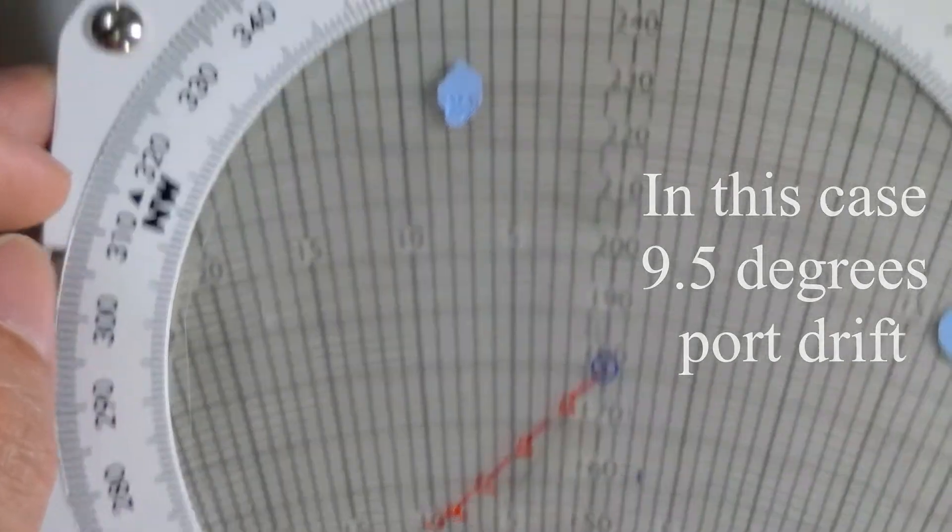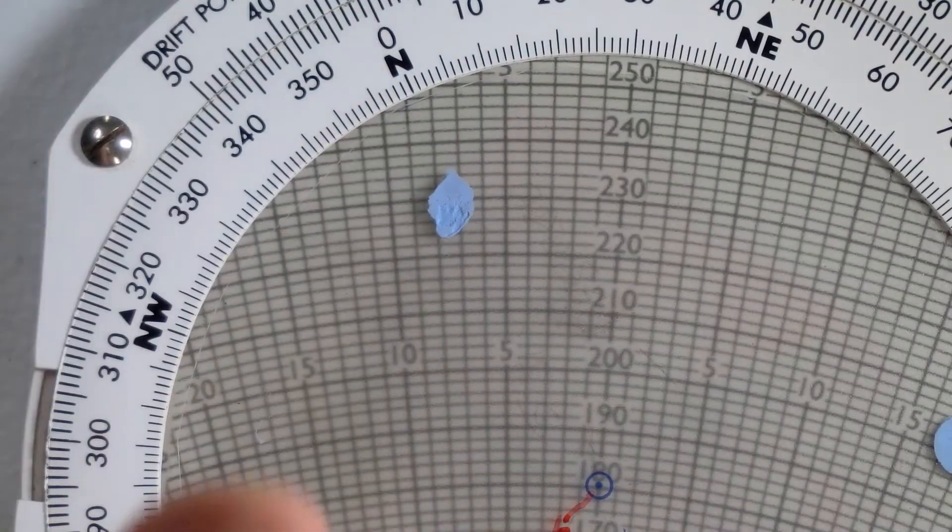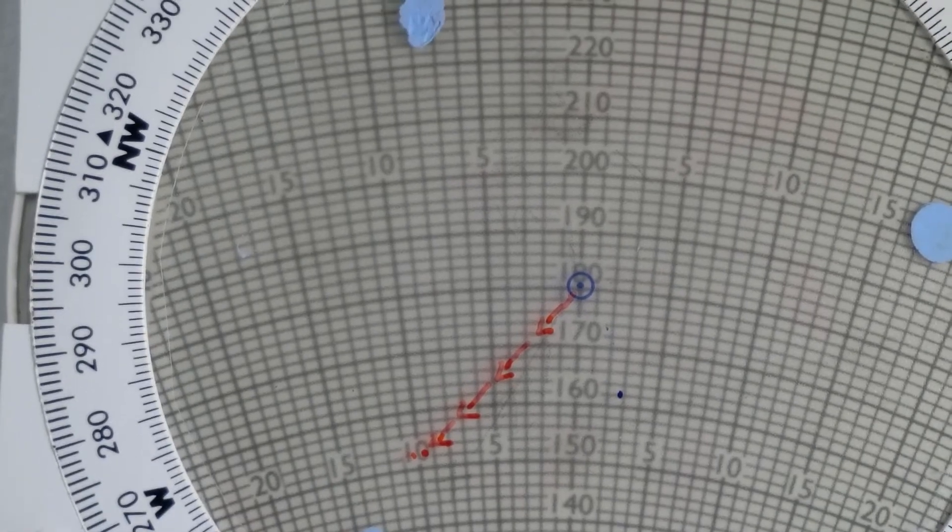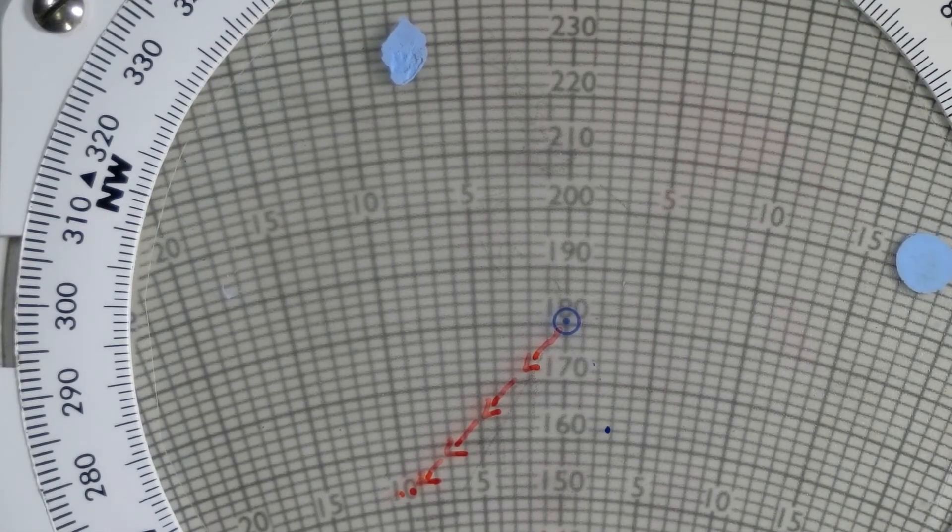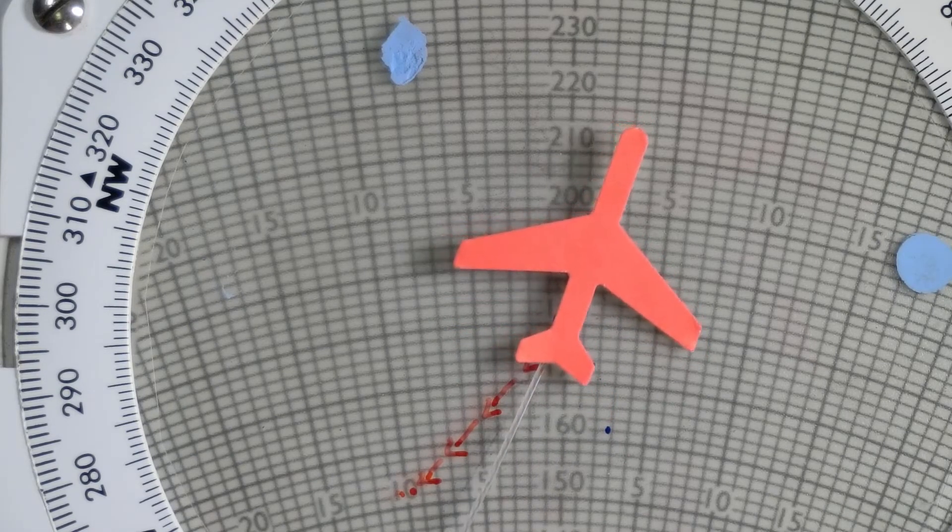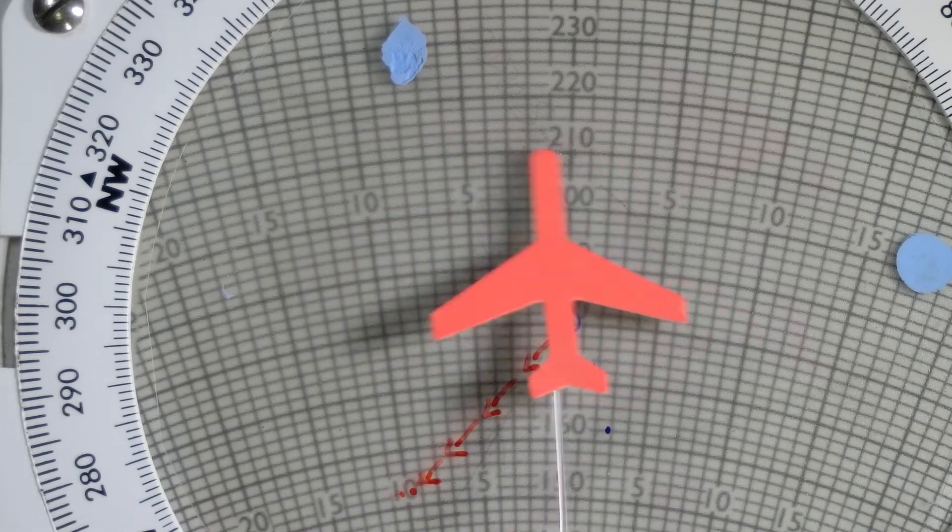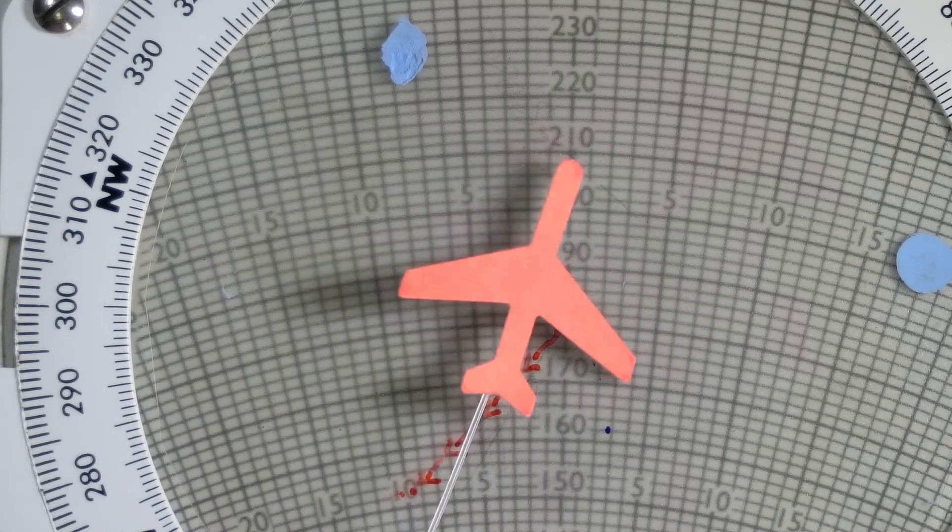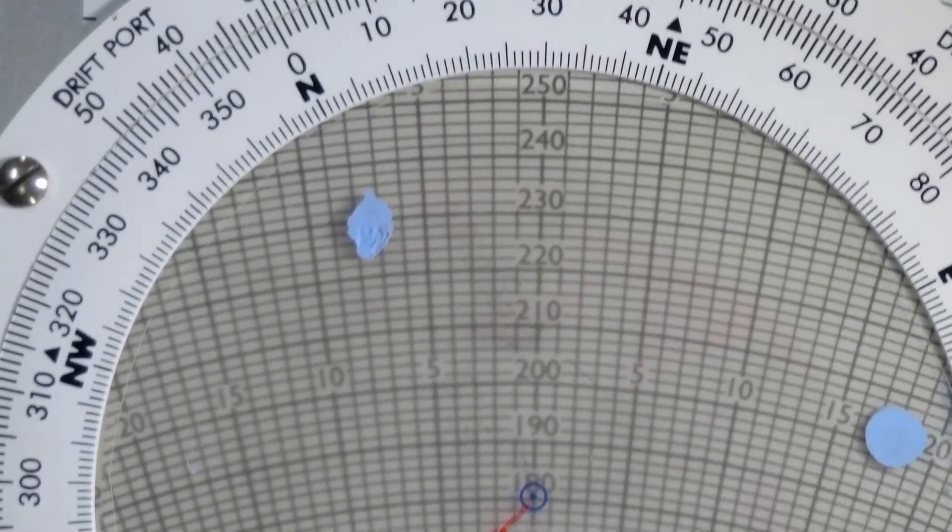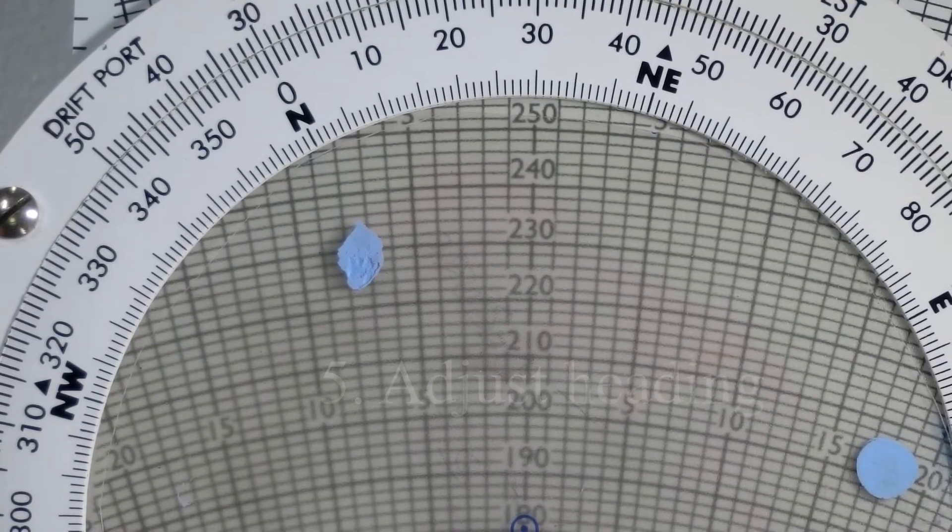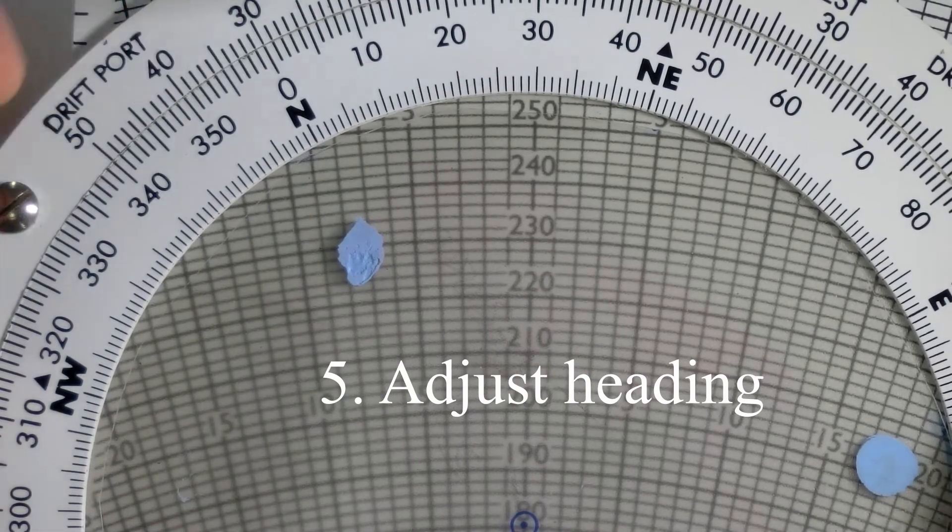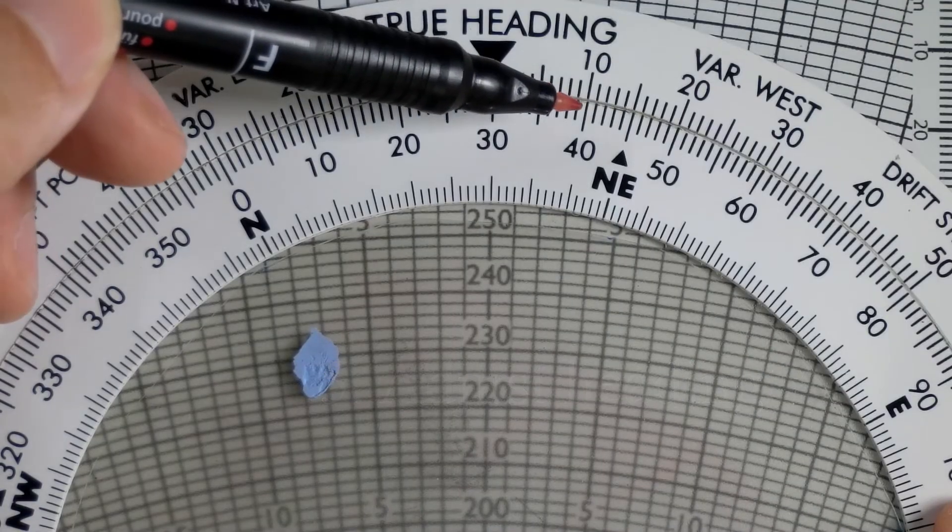And we would be blown port side because left of an aircraft is port. In order to counter this drift, this 9.5 degrees of drift, we need to turn the aircraft into the wind. That means we need to turn our airplane in this direction a little bit so that we don't drift off to the left. By how much should we turn the aircraft? Well, we're drifting 9.5 degrees port, so we should turn 9.5 degrees starboard. So, we're going to turn our aircraft face into the wind by about 9.5 degrees. And 9.5 degrees would be 39.5.